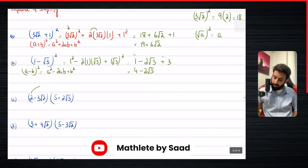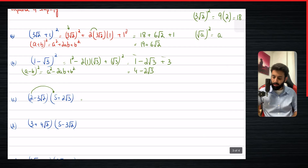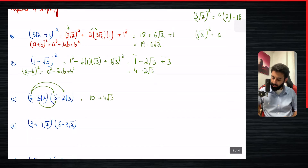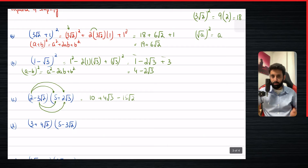Now part c. Two into five is ten, then two into 2√3 is plus 4√3, and minus 3√2 into five is minus 15√2. Be careful here — remember apples with apples and oranges with oranges. Instead of multiplying right away, I'll first write it down so I can show you exactly what's going on.